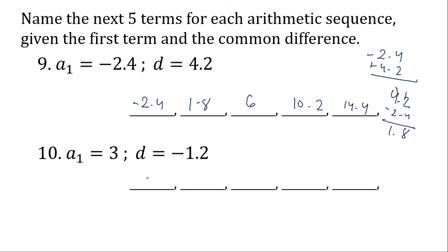For number ten, we have the first term three. Three plus negative one-point-two is one-point-eight. One-point-eight plus negative one-point-two is zero-point-six. Zero-point-six plus negative one-point-two is negative zero-point-six. Negative zero-point-six plus negative one-point-two is negative one-point-eight. So these are our answers.